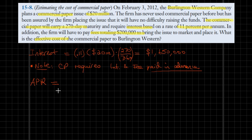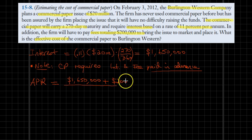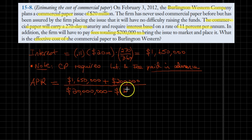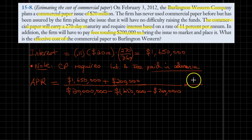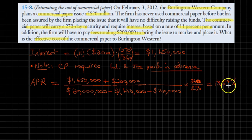The costs include the interest of 1,650,000 dollars plus the 200,000 dollar fee, and the principal we are borrowing is 20 million dollars. However, because the interest and the fees are prepaid, we are effectively borrowing a smaller amount — that figure forms the denominator of this ratio. We then multiply by 360 over the borrowing period of 270 days to annualize it. This calculation comes out to 33.59%, which is the effective cost of this commercial paper issue.